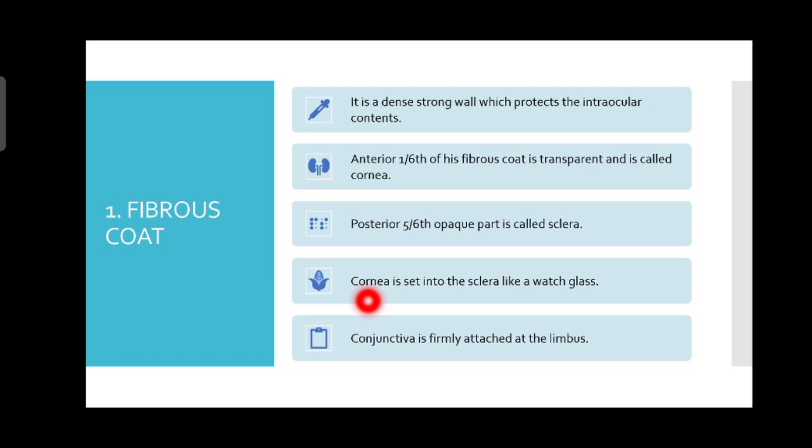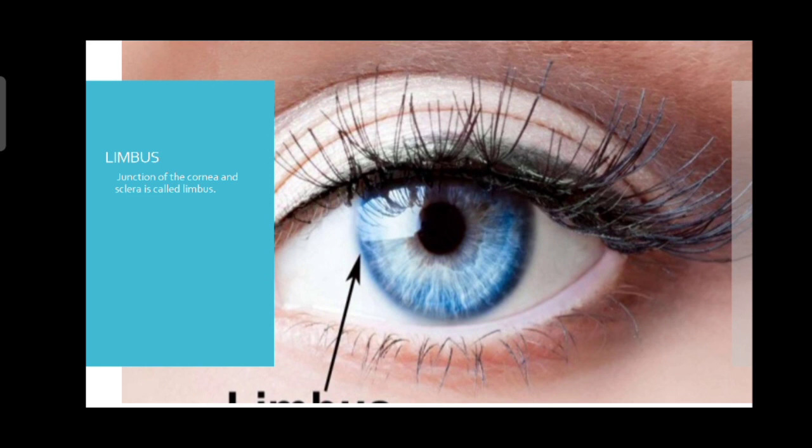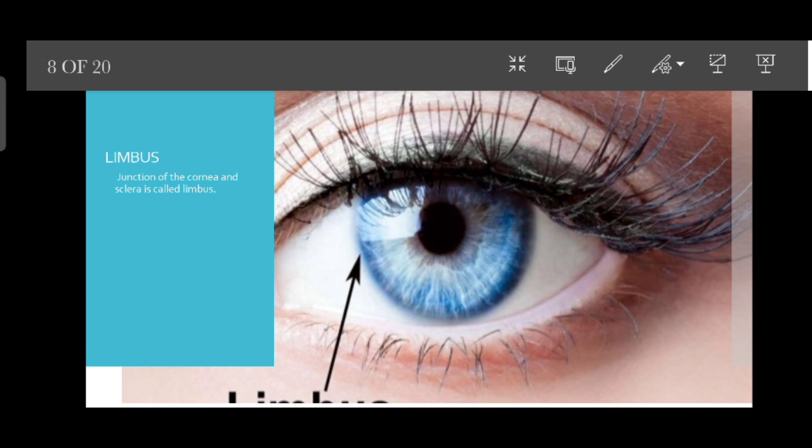Now let's talk about the conjunctiva. The conjunctiva is firmly attached at the limbus. We can see here that the junction of the cornea and the white sclera — this junction is called the limbus.